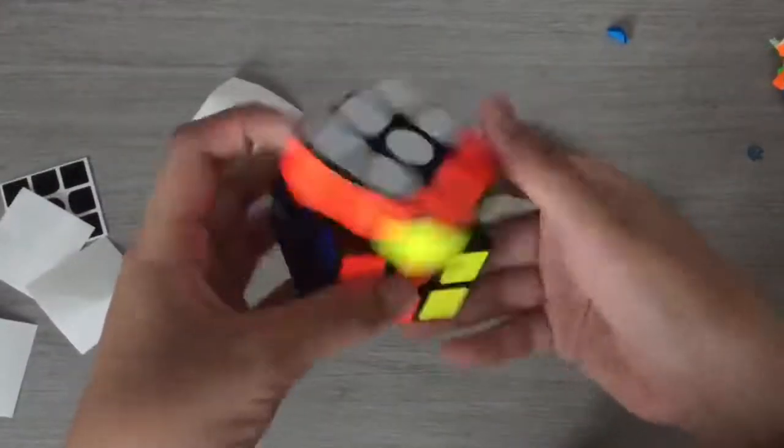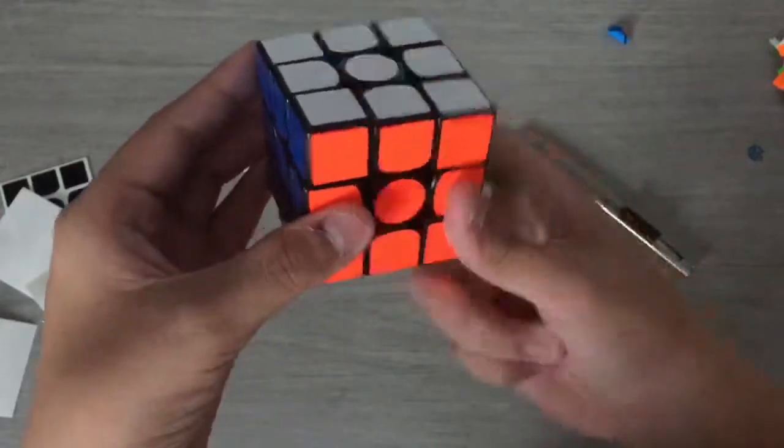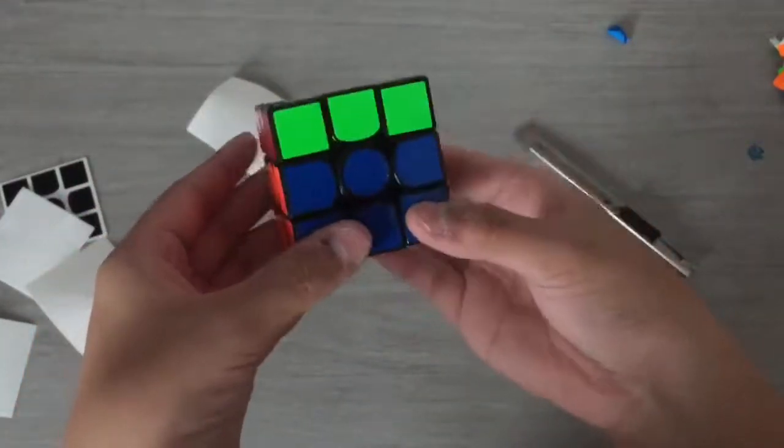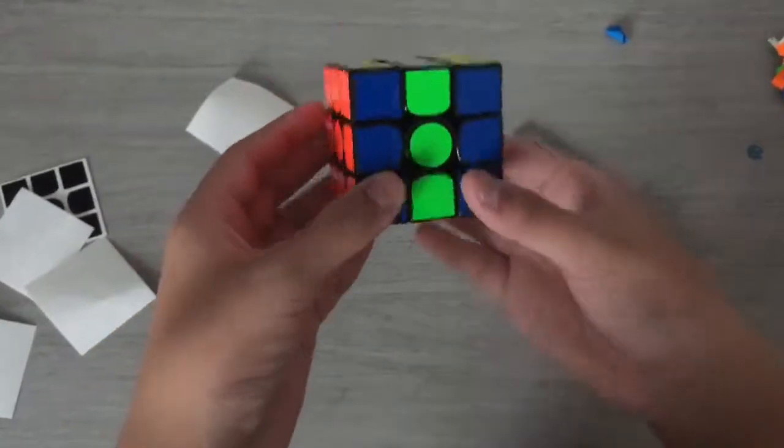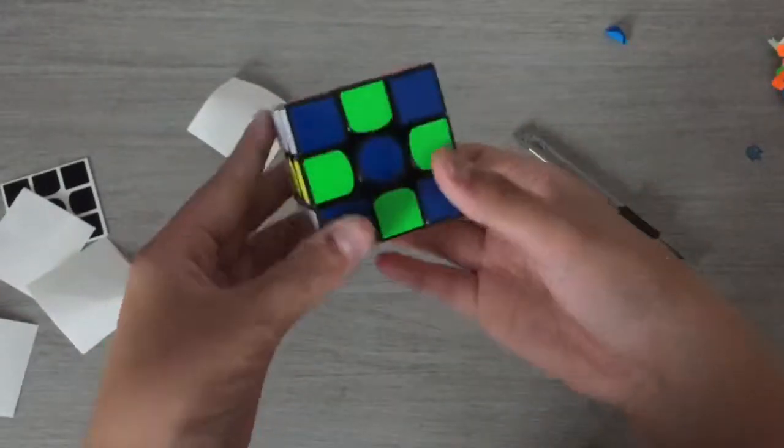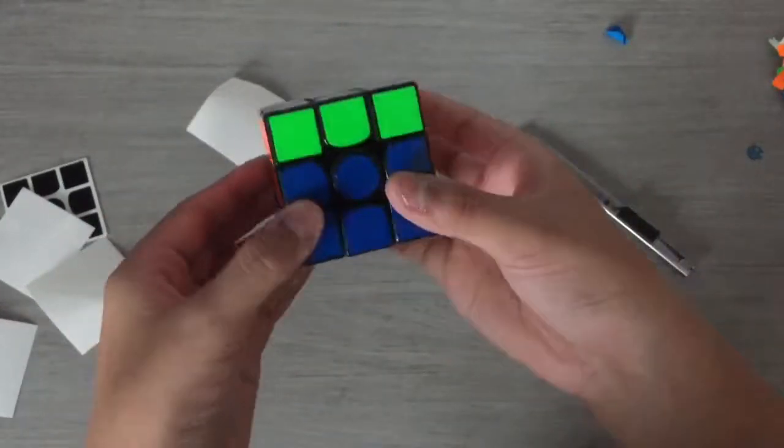I'm done stickering my cube. I think it looks very nice except for the yellow side - they didn't give me yellow stickers. I have no idea why, but it still looks very nice. I like it so much.